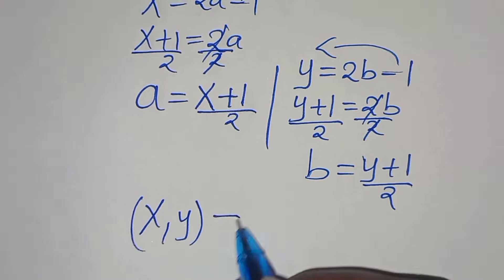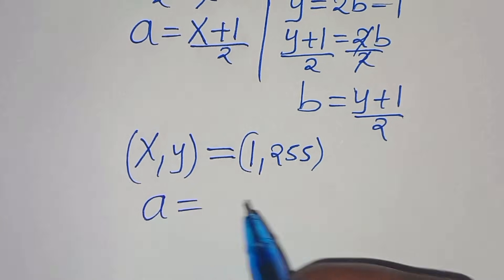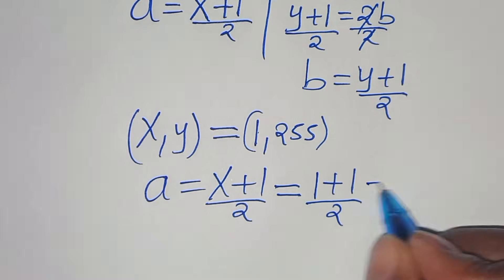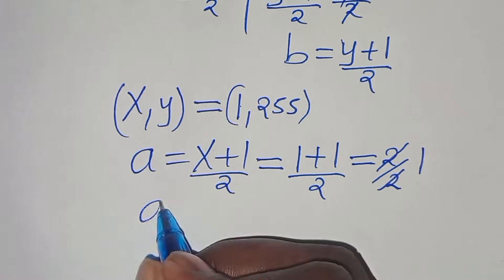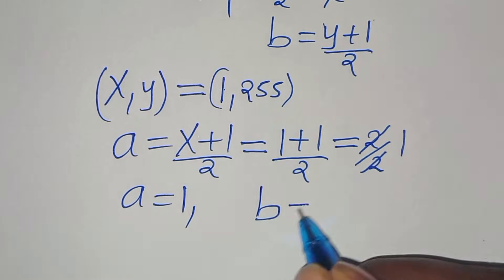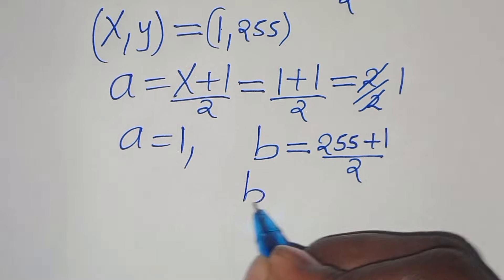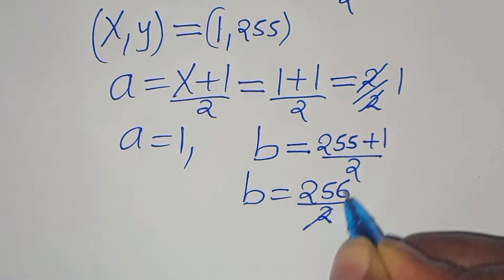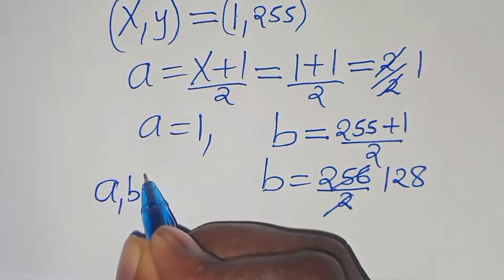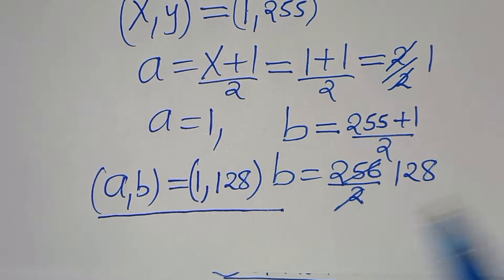For Case 1, x and y are 1 and 255. So a equals (1 plus 1) over 2 equals 1, and b equals (255 plus 1) over 2 equals 256 over 2 equals 128. Therefore the first solution is (a, b) equals (1, 128).